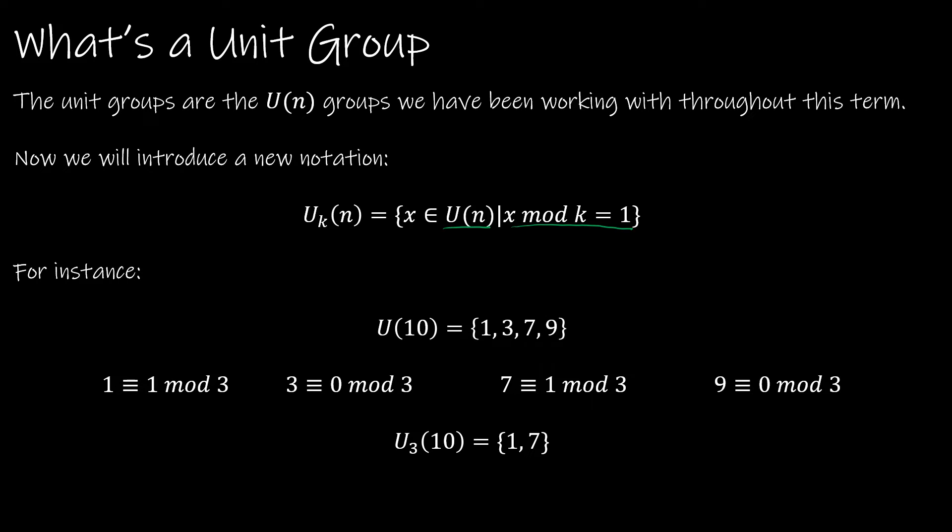So for instance, I've given you U(10). U(10) would consist of 1, 3, 7, and 9. If I look at each of those mod 3, I've just chosen a value 3 of k, so k is 3. 1 is congruent to 1 mod 3, 3 is congruent to 0 mod 3, 7 is congruent to 1 mod 3, and 9 is congruent to 0 mod 3. So if I'm looking for U sub 3 of 10, then I'm looking for anything that is congruent to 1 mod 3. So that would be just 1 and 7.